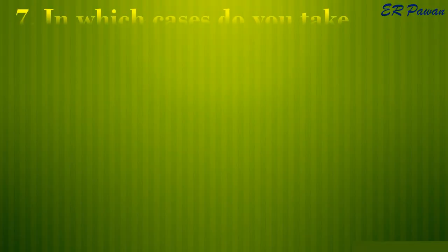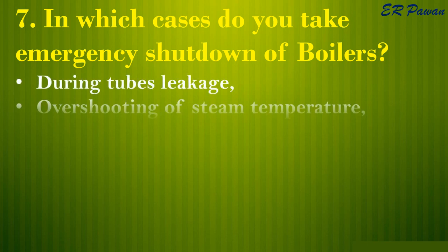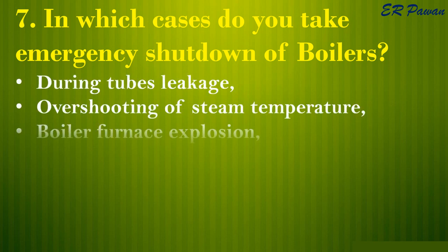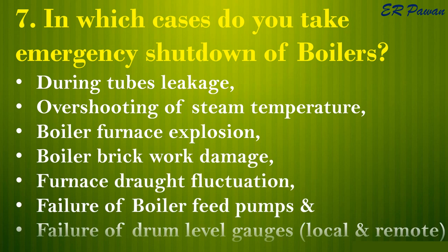Question 7: In which cases do you take emergency shutdown of boilers? 1. During tube leakage. 2. Overshooting of steam temperature. 3. Boiler furnace explosion. 4. Boiler brickwork damage. 5. Furnace draft fluctuation. 6. Failure of boiler feed pumps. 7. Failure of drum level gauges, local and remote.